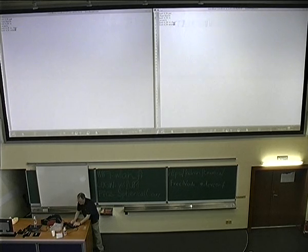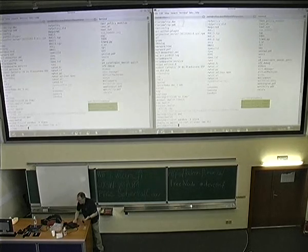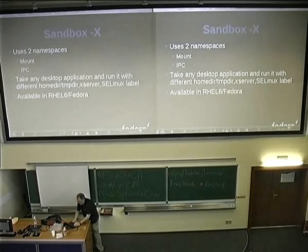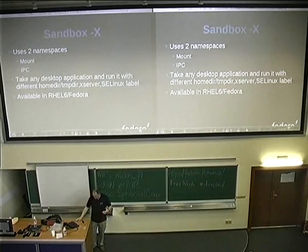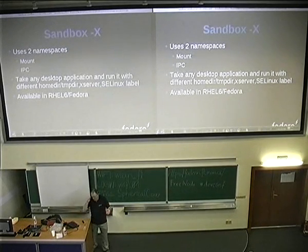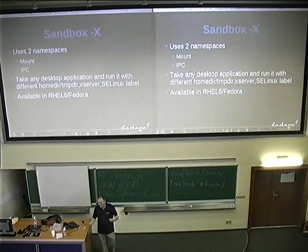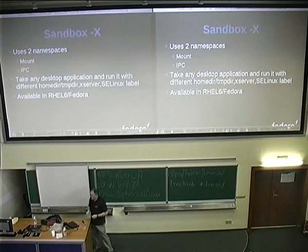What is this good for? Everything I download from the internet — a PDF or a .doc file — Firefox automatically runs Evince or OpenOffice inside of one of these sandboxes, so that the application cannot attack my desktop. It's using it for sandbox confinement. You can run Evince inside of it, and basically run entire desktops inside of these things. That's available in RHEL 6 — it can take any X Windows application.